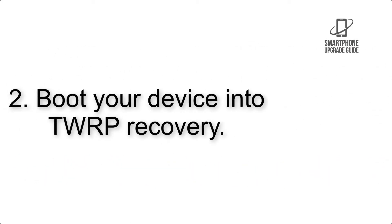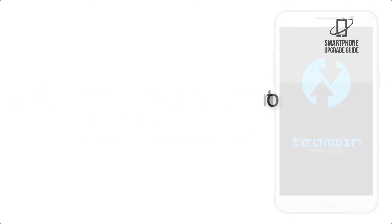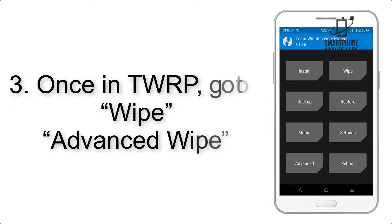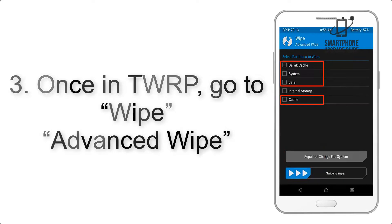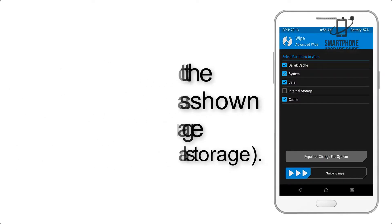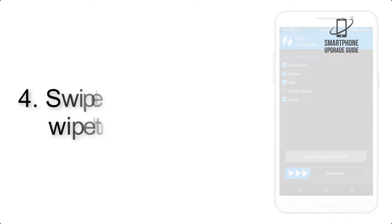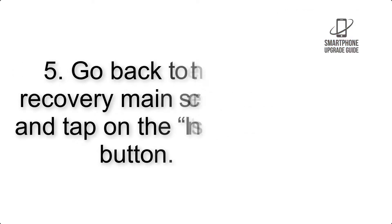Step 2: Boot your device into TWRP recovery. Once in TWRP, click on Wipe, then Advanced Wipe, and select the checkboxes as shown in the image, excluding internal storage. Step 4: Swipe the button to wipe the device.